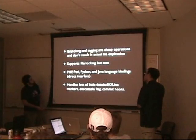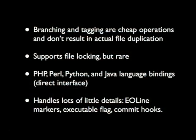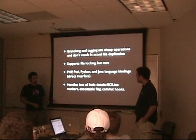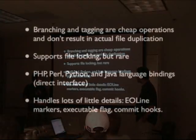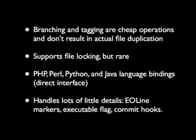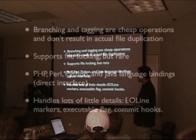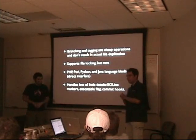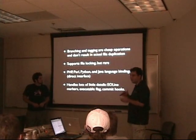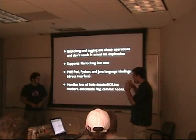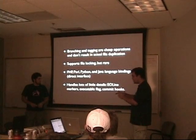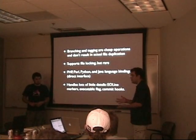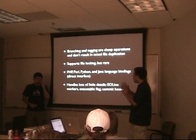Branching and tagging are cheap — it doesn't result in a whole new file, just the changes. You can lock things if you want for administrative reasons. PHP, Python, and Java all have bindings for SVN, meaning if you want to programmatically do some sort of checking in, you can. Typically you have pre-commit hooks and post-commit hooks — something that executes before something is checked in. For example, you might want to make sure the user has entered a certain type of information in the log message.